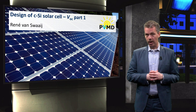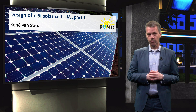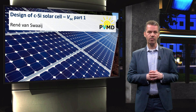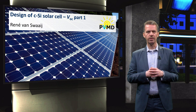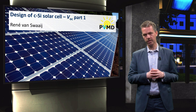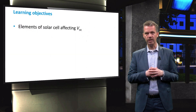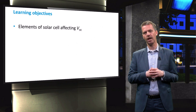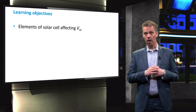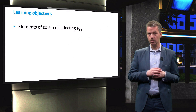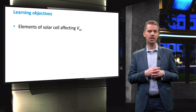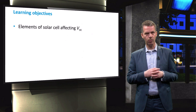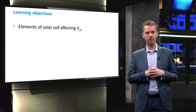Now that we know how crystalline silicon wafers are produced and doped, the next few videos will discuss design considerations to obtain high efficiency solar cells. In this video we will look at the open circuit voltage and how we can influence this parameter. A large open circuit voltage implies good utilization of the bandgap energy and is therefore a very important parameter in the design of a solar cell.